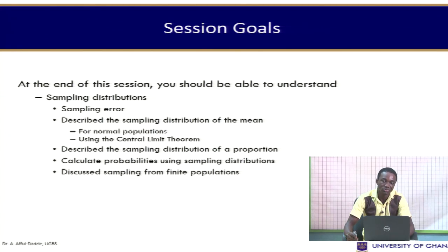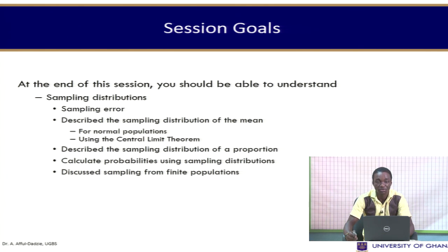In this session, we shall go through the mathematics of sampling and provide ways to make inferences using sample data. At the end of this session, you should be able to understand what sampling distributions are, what sampling errors are, describe the sampling distribution of the mean, describe the sampling distribution of a proportion, calculate probabilities using sampling distributions, and discuss sampling from finite populations.